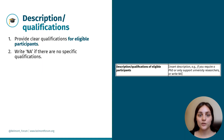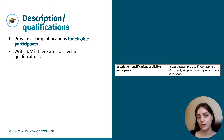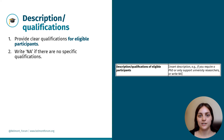In the third box, provide a clear description of the qualifications of eligible participants. This can include requirements like a PhD, university researcher status, or simply writing N/A if there are no specific qualifications.